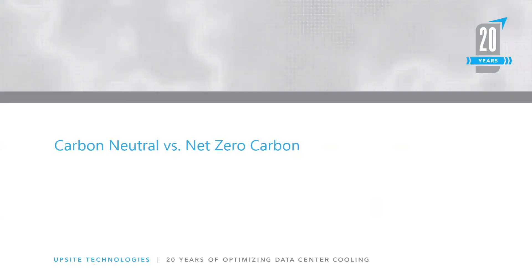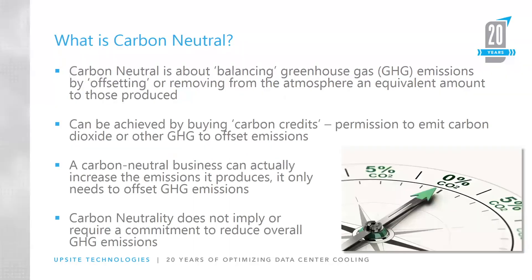The first section is carbon neutral versus net zero carbon. Carbon neutral is all about balancing greenhouse gas emissions by offsetting or removing from the atmosphere an equivalent amount of those produced. What that really means is that we essentially put no more carbon into the atmosphere than we're actually offsetting — either sequestering, which is removing or preventing, or offsetting by putting something in place.